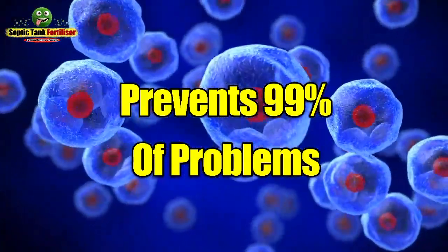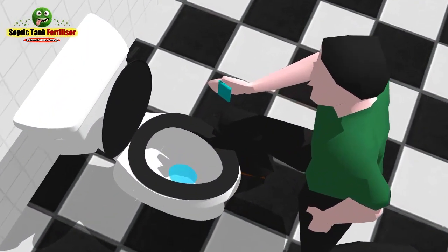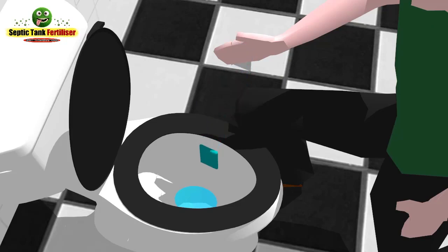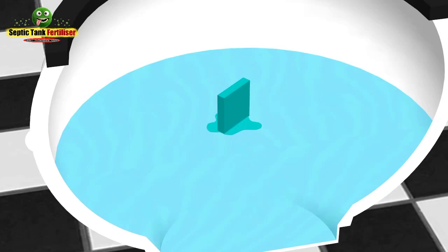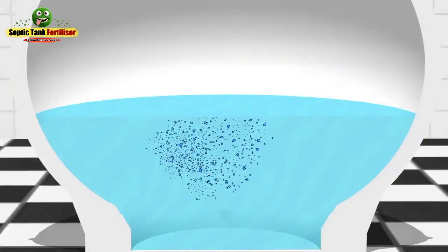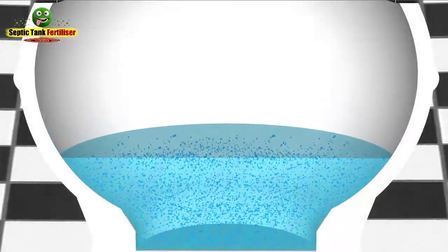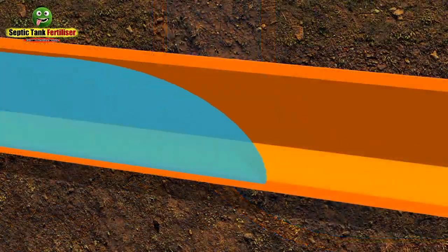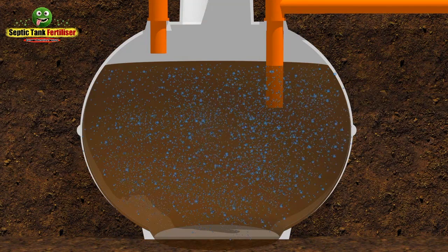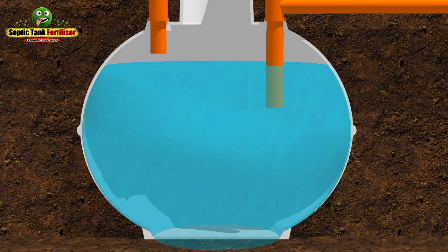So how does Septic Tank Fertilizer work? In each of the 12 water-soluble sachets there are billions of organic bacteria and enzymes which remove smells, revive dead systems, and prevent 99% of all septic tank problems. Simply drop one sachet into the toilet and let it dissolve — which takes about 30 seconds — releasing billions of organic bacteria and enzymes into the water. Then just flush the loo. The bacteria travel down the pipes to the septic tank, removing germs as they go, and once inside the tank they instantly get to work removing smells and protecting it from the harmful effects of cleaning products.